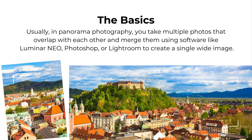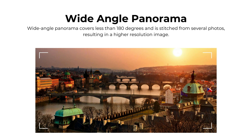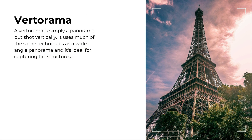That single wide image can come in multiple different formats. The most common is the wide-angle panorama, which covers less than 180 degrees and is stitched from several photos — usually resulting in a higher resolution final image. The second format is very similar and it's called a vertorama. A vertorama is simply a panorama shot vertically, using much the same techniques, and it's ideal for capturing tall structures.